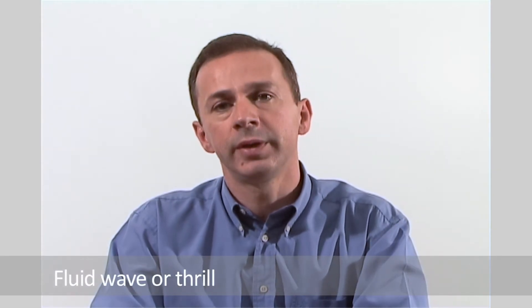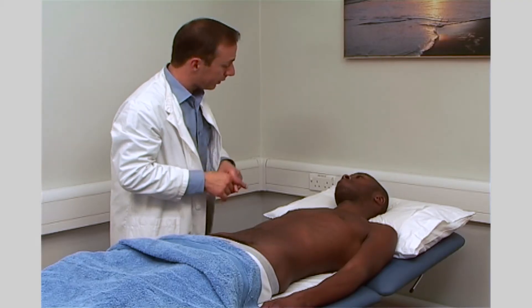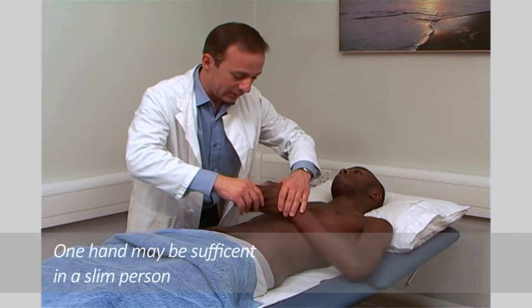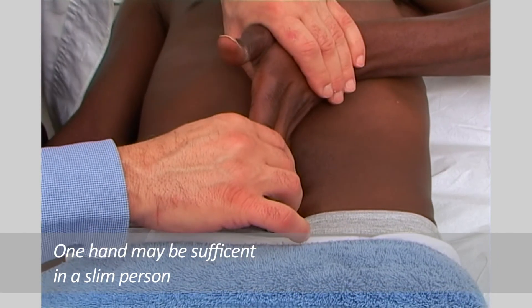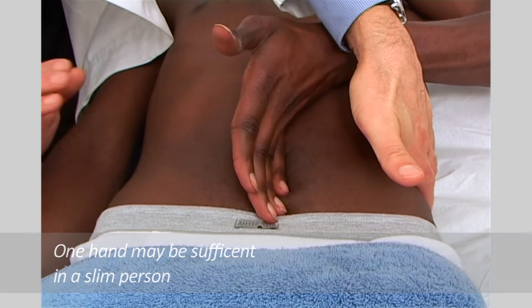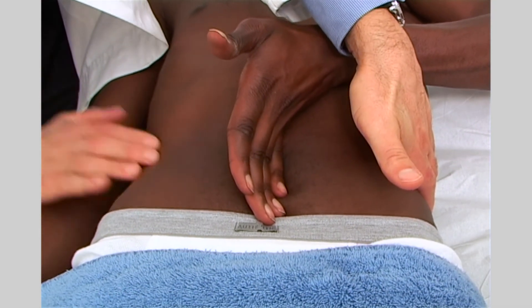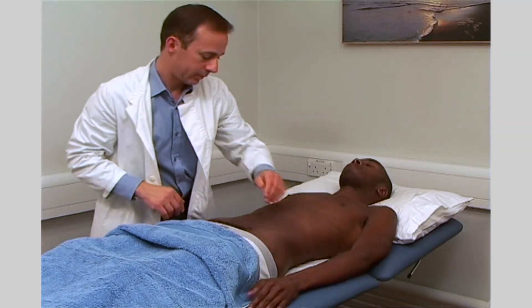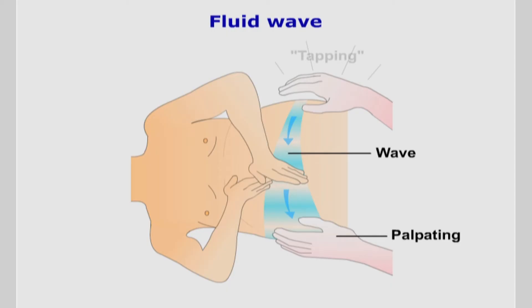Another method for assessing for the presence of intraperitoneal fluid is to test for fluid wave or fluid thrill. The patient or an assistant will need to help you with this. Ask them to press firmly with the edges of both hands down the midline of the abdomen. You then tap one flank sharply with your fingers. The palm of your other hand is placed flat on the opposite flank. If fluid is present when you percuss on one side, the wave is transmitted to the other hand.